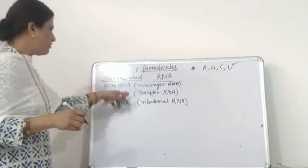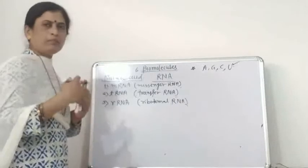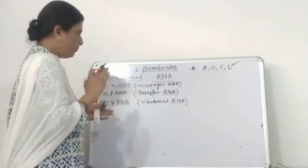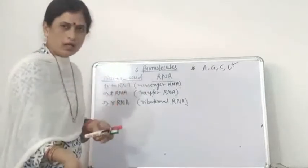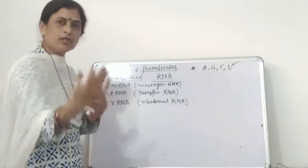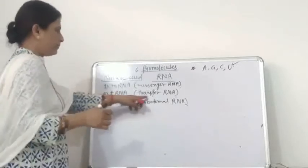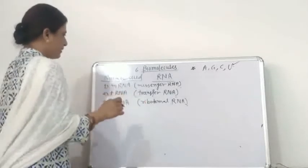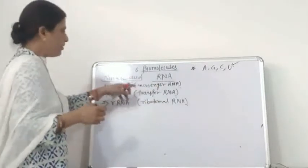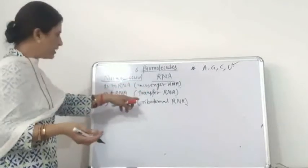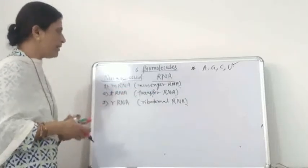Messenger RNA — what is mRNA called messenger RNA? It transfers the message from one part to another part, from one site to the other site. This is called messenger RNA. tRNA means it transfers the amino acids.